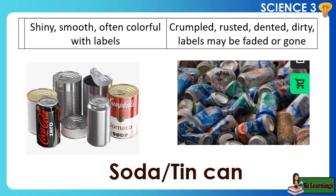Soda tin can: Before disposal — shiny, smooth, often colorful with labels. After three days of disposal — crumpled, rusted, dented, dirty, with labels that may be faded or gone.